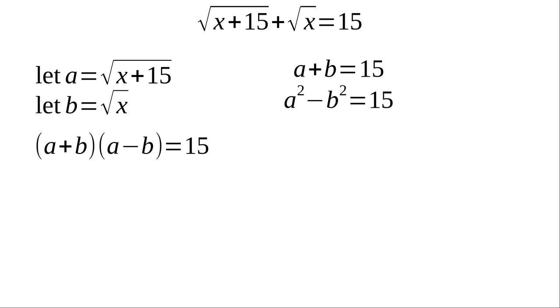Now, we know something from our original equation that a plus b is 15. So we can replace that. So now we have 15 times a minus b is equal to 15. Now we've got the common factor of 15 on both sides. We can divide by 15. And now we have a minus b equals 1.